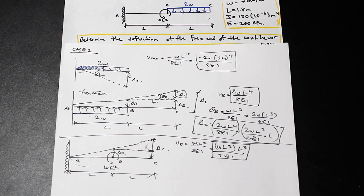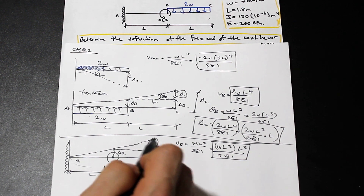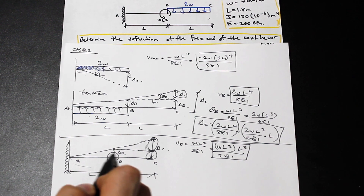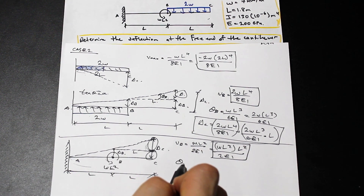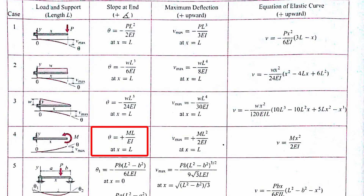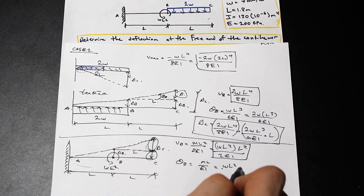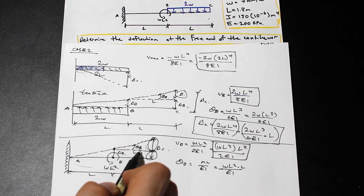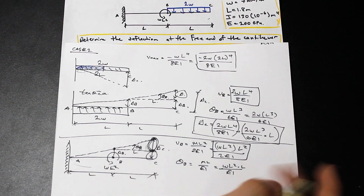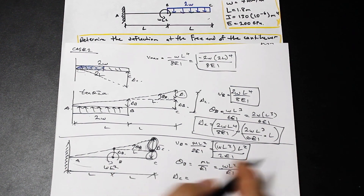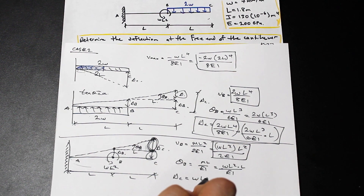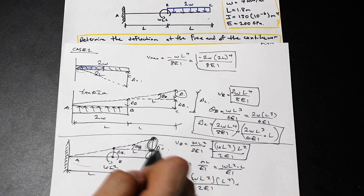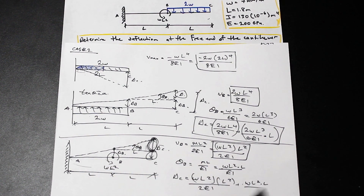Now we find theta B for the moment case. According to Case 4, theta B = ML over EI. Plugging in M = WL² and L = L gives theta B = WL³ over EI. Multiplying theta B by L gives the small upper portion of deflection from B to C. So delta C for this case is WL² × L² over 2EI (which is delta B) plus WL² × L over EI × L (which is theta B times L).